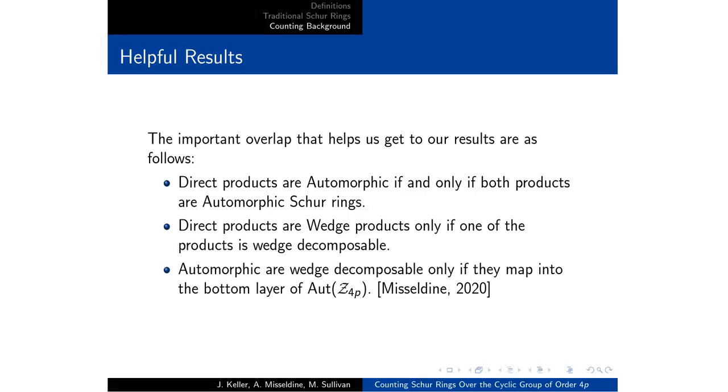It is important to note some of the overlap. For instance, direct products are automorphic when both products are automorphic. Direct products are wedge when one of the products is wedge. And we also have that automorphic are wedge decomposable only if they map into the bottom layer of the lattice of the automorphism of Z4P for our particular case.